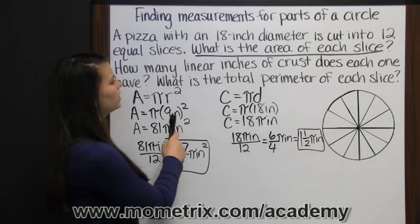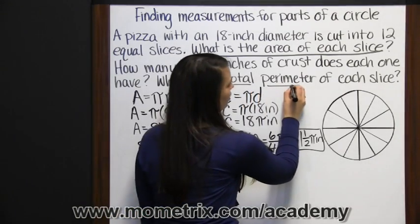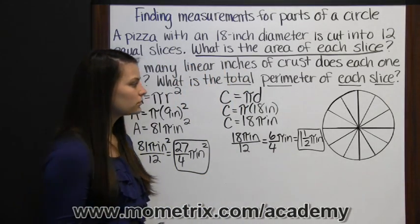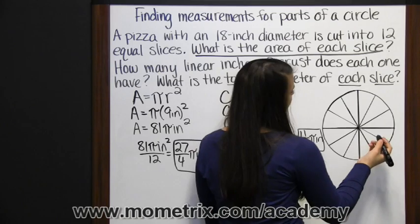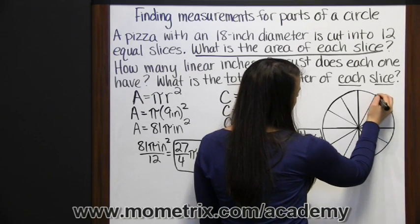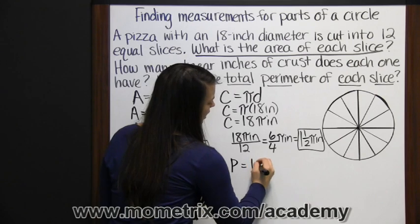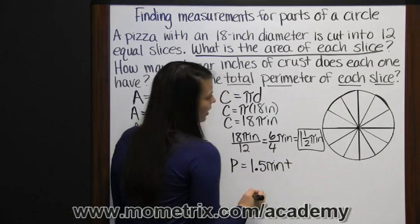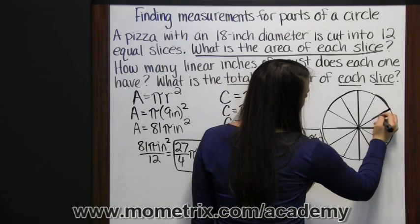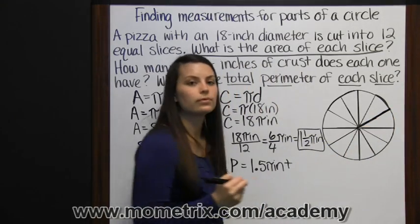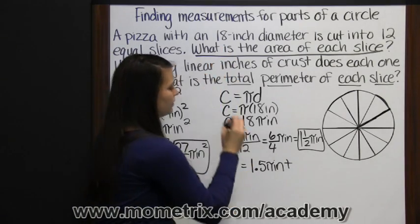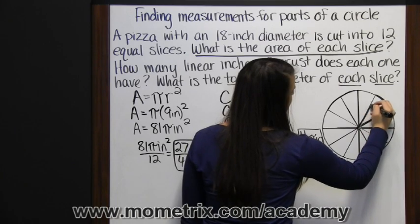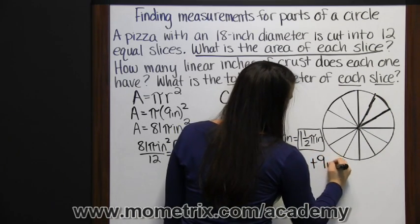The last question says, what is the total perimeter of each slice? So perimeter is the distance around. The perimeter of a slice of pizza would be our crust part. So that's that 1 and 1 half pi inches. Plus this segment, which is our radius. Which we found earlier was half the diameter. So plus 9 inches. Plus the radius again. So plus 9 inches again.